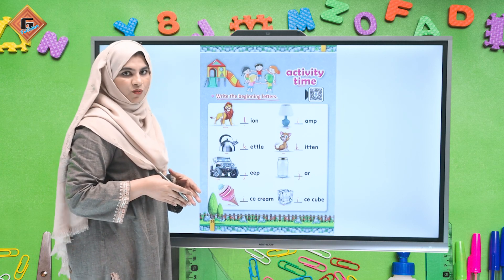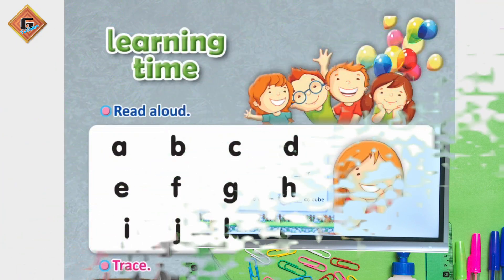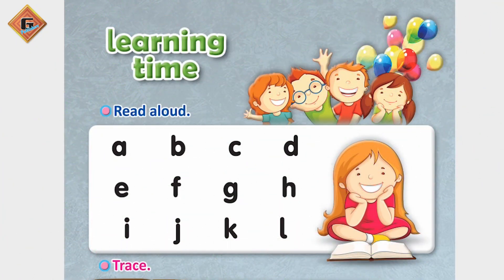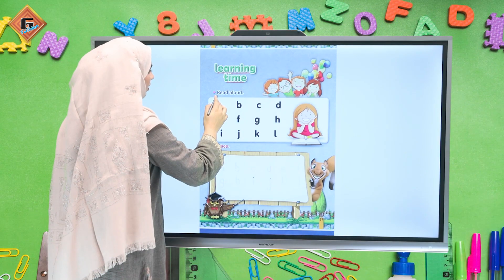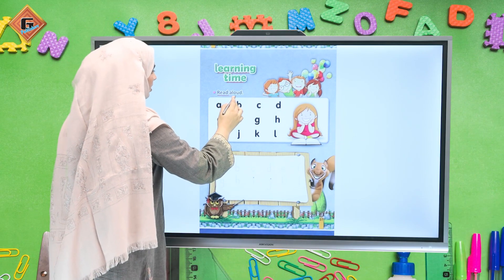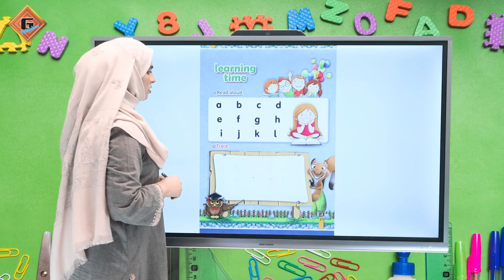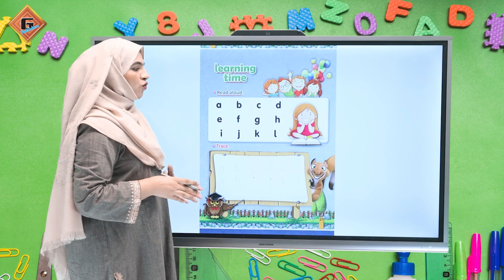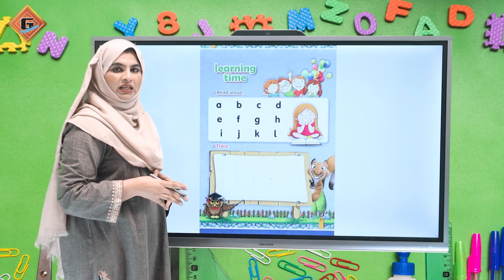Ab hum chalte hain next page pe. So this is page number 37. This is our learning time. What do we need to do? Read aloud. First of all, you need to do this in letters.